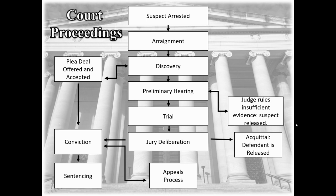If they continue, a preliminary hearing is held — like a mini trial — where a judge determines if the prosecution has enough evidence to actually go to trial. Then the trial takes place: the defense and prosecution present their cases, and jury deliberation begins. If the defendant is convicted, the judge will issue sentencing. However, if the jury delivers a not guilty verdict, the defendant is free from all charges. If the defendant is found guilty, there is also an appeal process where the case can be reviewed.